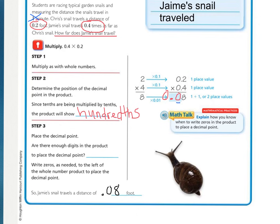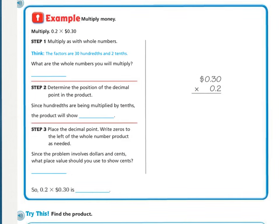Turn your page over. Looking at this example, this time we're going to multiply money — two-tenths times thirty cents. Again, step one is to multiply as whole numbers, ignoring the decimal. The factors are thirty hundredths and two-tenths. Factors are the numbers being multiplied. Ignoring the decimals, you will be multiplying thirty times two.